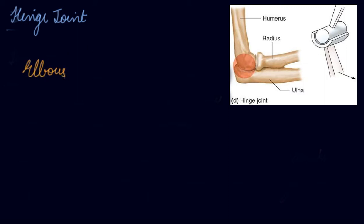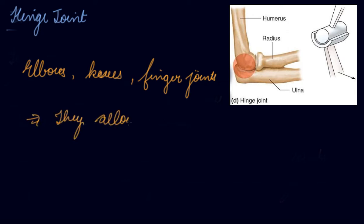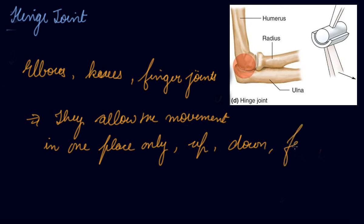Your elbows, your knees, finger joints, allow movement in one plane only. That is upward or downward, backward or forward, like the hinge of a door. Such joints are called hinge joints. They allow the movement in one plane only, like up, down, or forward or backward, like the hinge of a door.